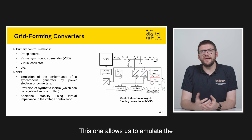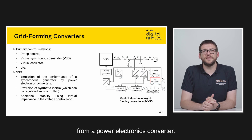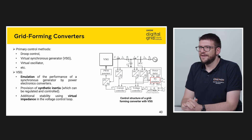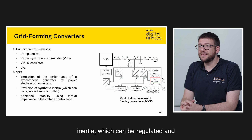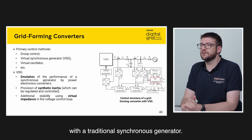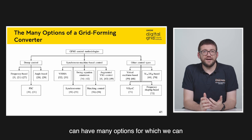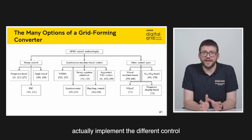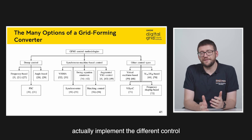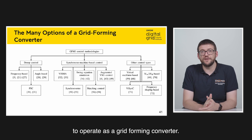The VSG allows us to emulate the performance of synchronous generators from a power electronics converter. This also allows us to provide synthetic inertia which can be regulated and controlled, something that we cannot do with a traditional synchronous generator. In the literature we can find many options for implementing the different control loops that allow a converter to operate as a grid-forming converter.